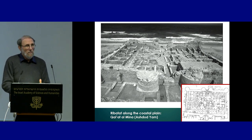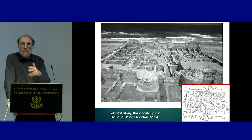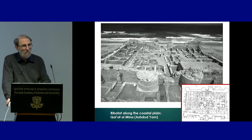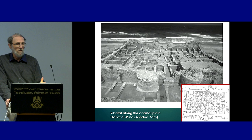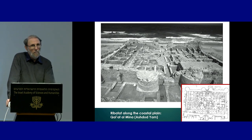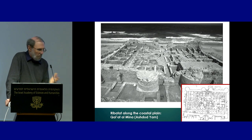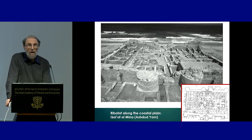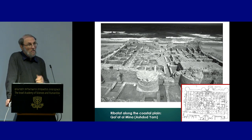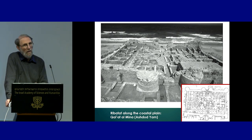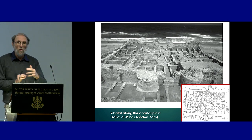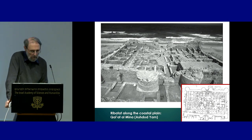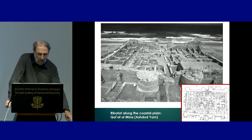Khirbat al-Minya and Sinnabra fit well with the pattern of coastal fortresses, the ribat, constructed along the Mediterranean coast. The best example excavated at Ashdodiyam, Qal'at al-Mina, right on the seashore — a touristic site you can visit. The architecture, small finds, and nature of the site are completely different from everything that existed in this area before. The site contains a mosque, and components showing similarities to the Umayyad castles, but also incorporating local elements in the material culture.